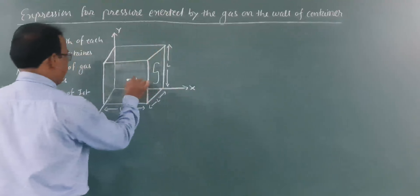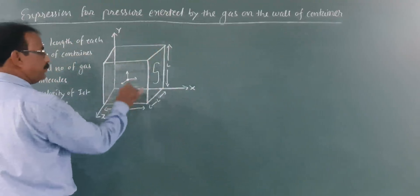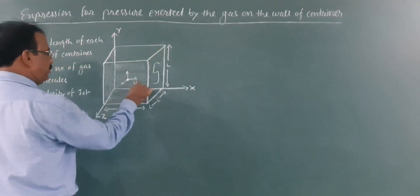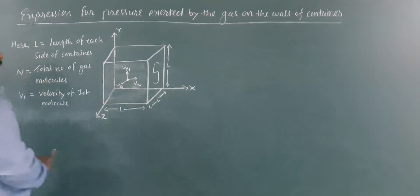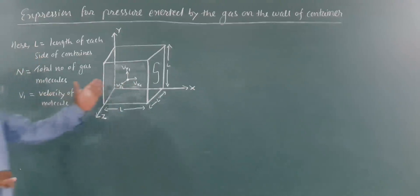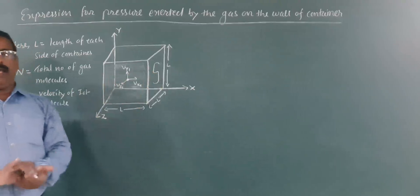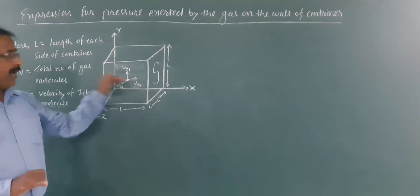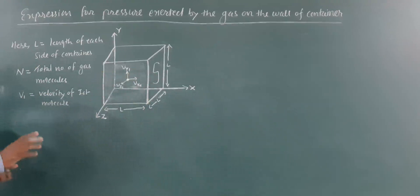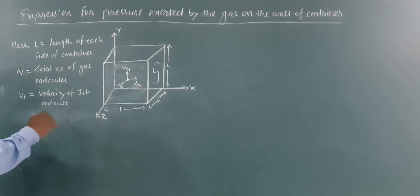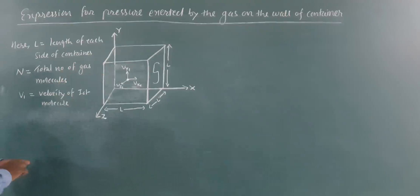The X component will be Vx1, the Y component will be Vy1, and the Z component will be Vz1. We have assumed that the molecule is colliding with wall S, meaning only its X component is changing, while the Y and Z components remain unaltered.